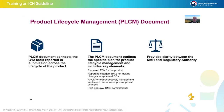The product lifecycle management document will include the established conditions, the change reporting categories, any PACMPs if there are any, and also any post-approval CMC commitments. This not only provides clarity between the marketing authorization holder and the regulatory authority, but also within the company itself — between technical groups, regulatory groups, and quality organizations. And also within the regulatory authorities, talking about reviewers, inspectors, and compliance groups. There is great benefit in having that clarity as to what is actually required to be communicated to the health authority.